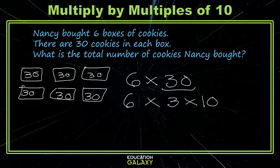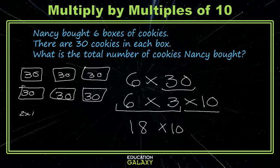Now, maybe we can work with this fact that we do know — so 6 times 3 is 18, and now we're just left with multiplying by 10. When we had two groups of 10, that was 20, and when we had three groups of 10, that was 30, and when we had four groups of 10, that was 40.